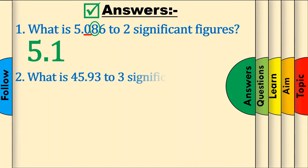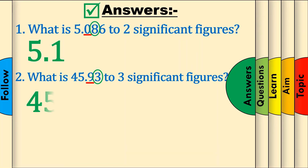Question 2: What is 45.93 to 3 significant figures? Using our method, we would have underlined 9 as the third significant figure and circled the 3 next to it. We can skip Step 3 because the digit 3 isn't 5 or more. Finally, get rid of everything after the underlined number to get 45.9.